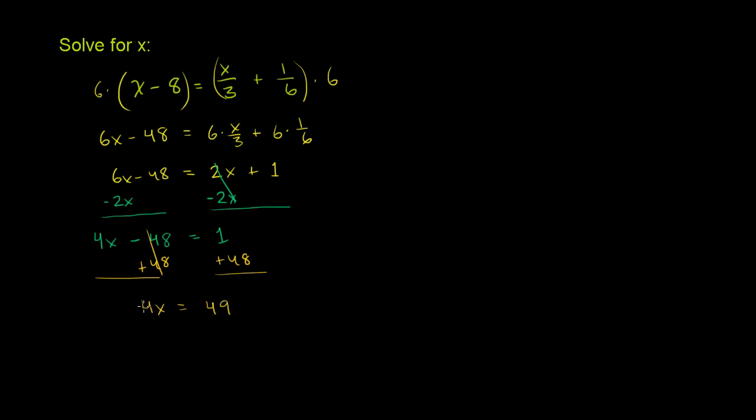And now I've isolated the x, but it's still multiplied by a 4. So to make that a 1 coefficient, let's multiply both sides by 1 fourth. Or you could also say, let's divide both sides by 4.